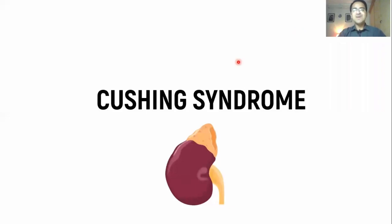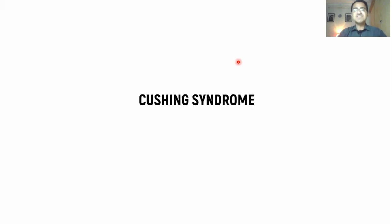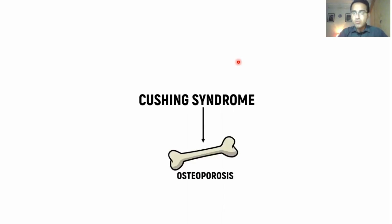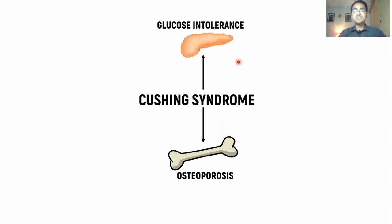Today we are going to talk about workup of Cushing syndrome. Cushing syndrome is the presence of excess cortisol in the body due to any cause. Whenever there is excess cortisol in the body, it affects each and every organ. It affects bones and causes osteoporosis because it interferes with osteoblastic function. It causes glucose intolerance because it is a stress hormone.